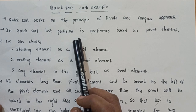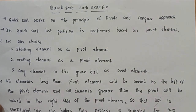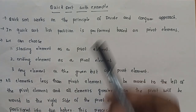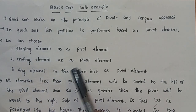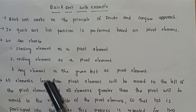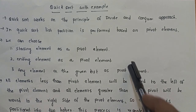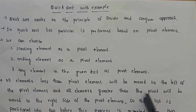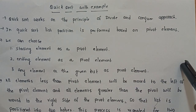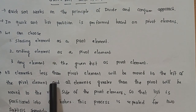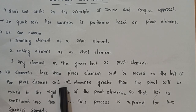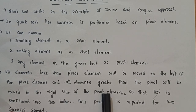In QuickSort, the list of elements is partitioned based on the pivot element. We will divide the list based on the pivot element. We can choose the starting element of an array as a pivot element, or the ending element as a pivot element, or any element in the array as a pivot element — the first element, the last element, or any middle element.